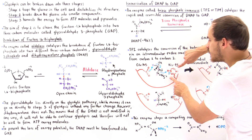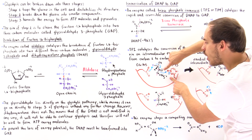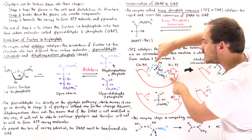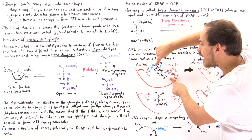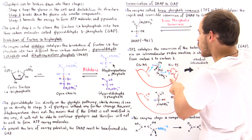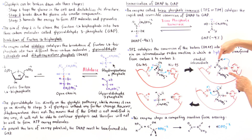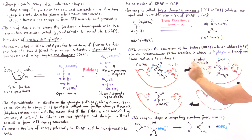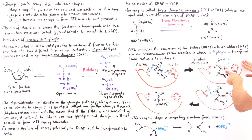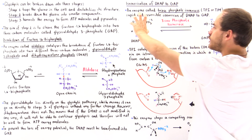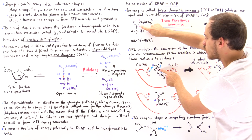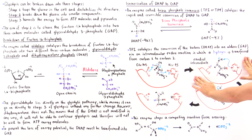This forms an enediol intermediate — 'diol' meaning two hydroxyl groups, one on carbon 1 and one on carbon 2. If we flip this molecule upside down, carbon 1 aligns with carbon 1, carbon 2 with carbon 2, and carbon 3 with carbon 3. In the second step, the nitrogen that lost an H now acts as a base and takes away the H from the oxygen, forming the next intermediate. This intermediate is unstable because of the negative charge on the oxygen.